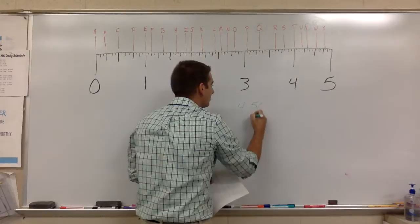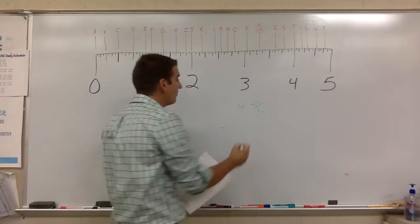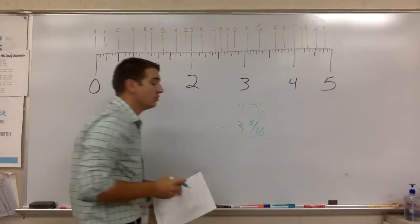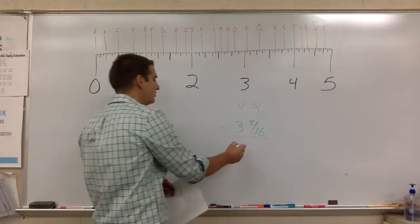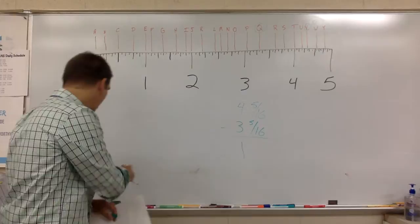Cool. And, Q is at one, two, three, four, five sixteenths. So, this one isn't too bad at all. We can do subtraction. Five sixteenths minus five sixteenths is zero sixteenths. Four minus three is one. That one was pretty easy.